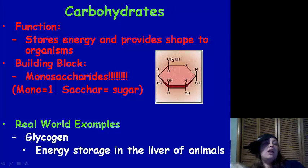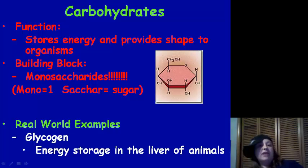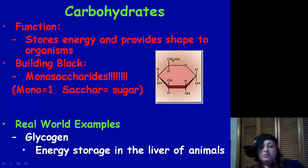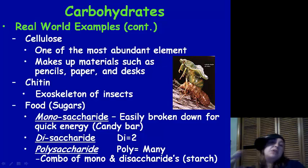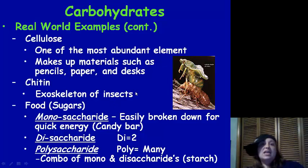Starting with carbohydrates — their function includes storage of energy, providing shape to organisms. Building blocks are monosaccharides, meaning one sugar. In the real world, we've got glycogen, which is storage for living animals. In plants they use cellulose — it makes up pencils and paper. Then we've got chitin, which is the exoskeleton of insects — it's what you hear when you step on them and they go crunch.